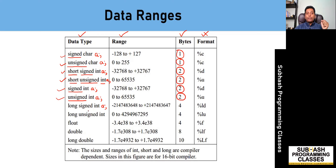For long signed int, the total memory allocated is four bytes because of the long qualifier, and the range includes both positive and negative values because of the signed qualifier. For long unsigned int, the memory allocated is also four bytes, and the range of values goes from zero up to a very large positive number — only positive values — because of the unsigned qualifier.